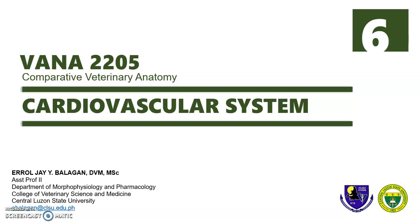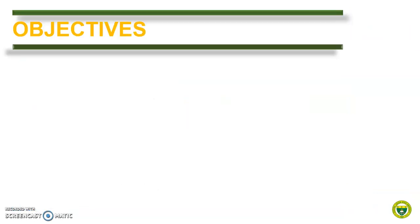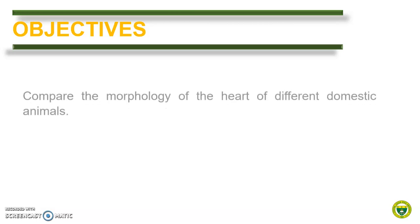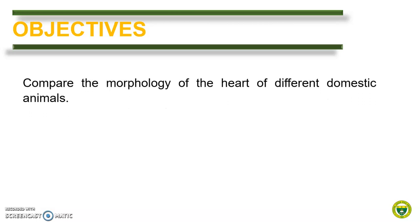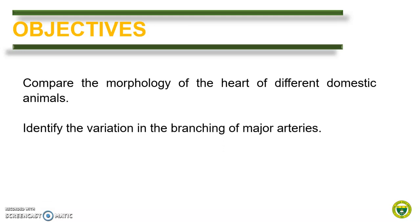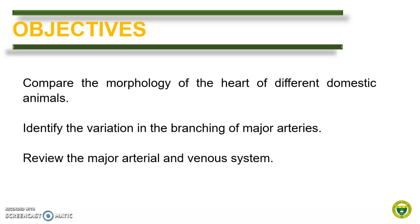Welcome to Module 6. In this part of the lecture, we will have a comparative review on the morphology of the heart and identify the differences in the branching of the major arteries among domestic animals. At the end of this presentation, each student should be able to compare the morphology of the heart of the different domestic animals, identify the variation in the branching of major arteries, and review the major arterial and venous system.